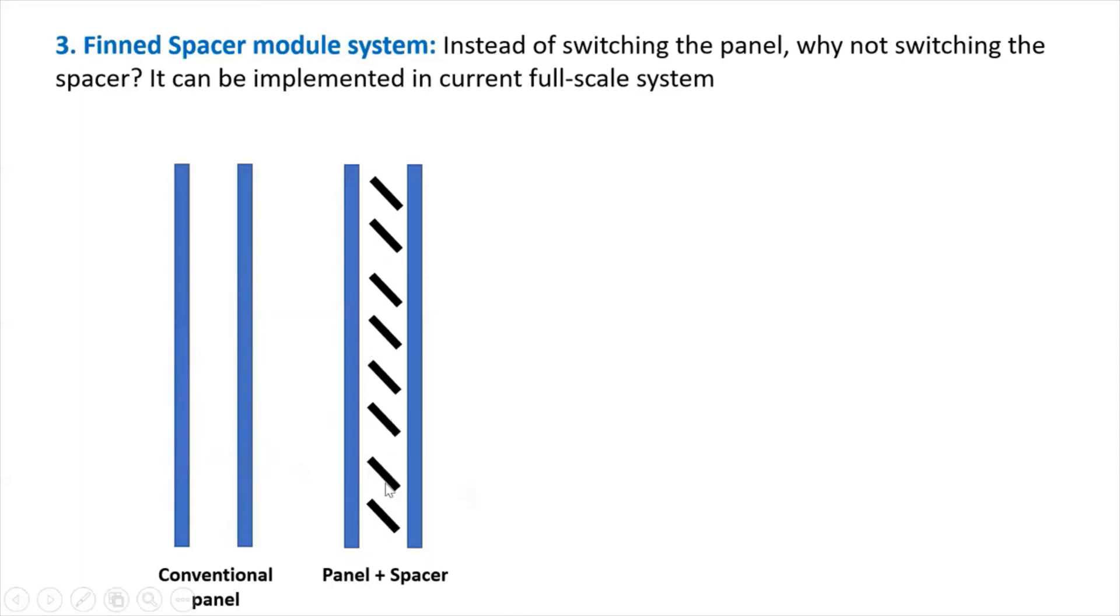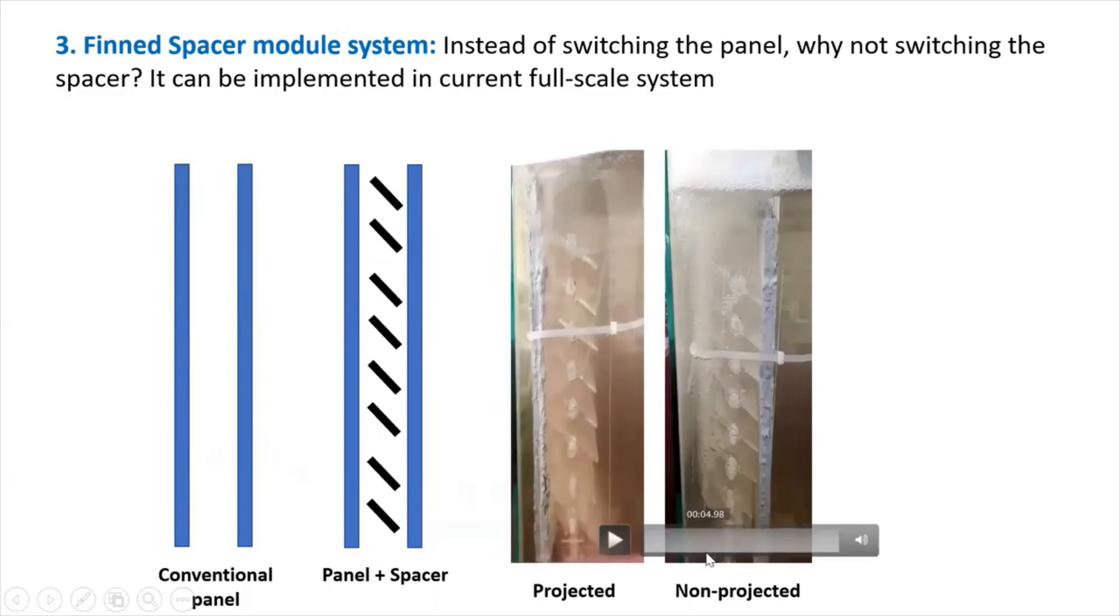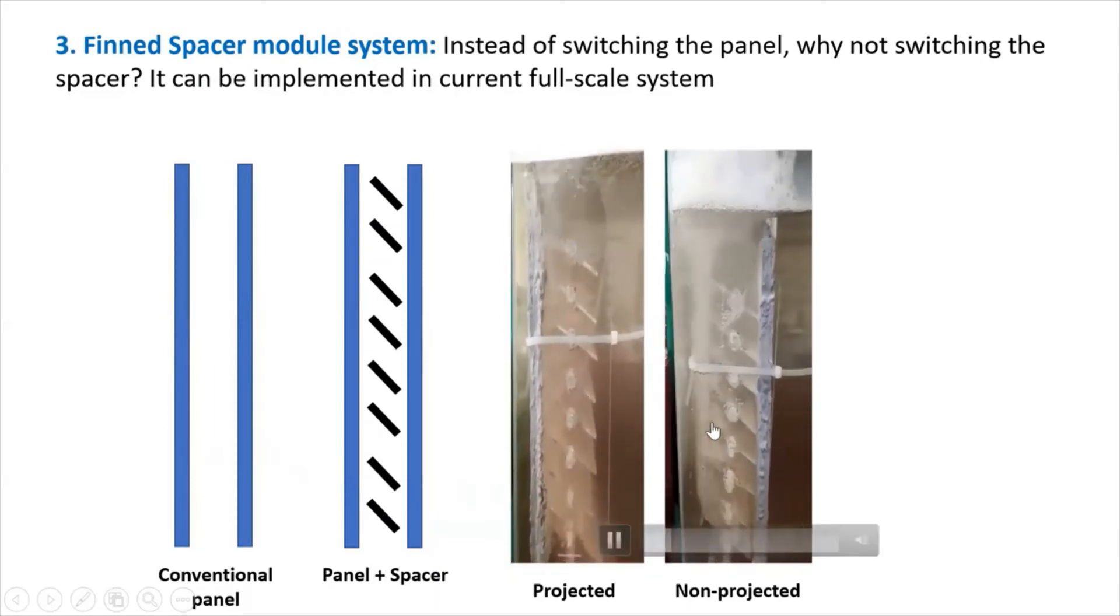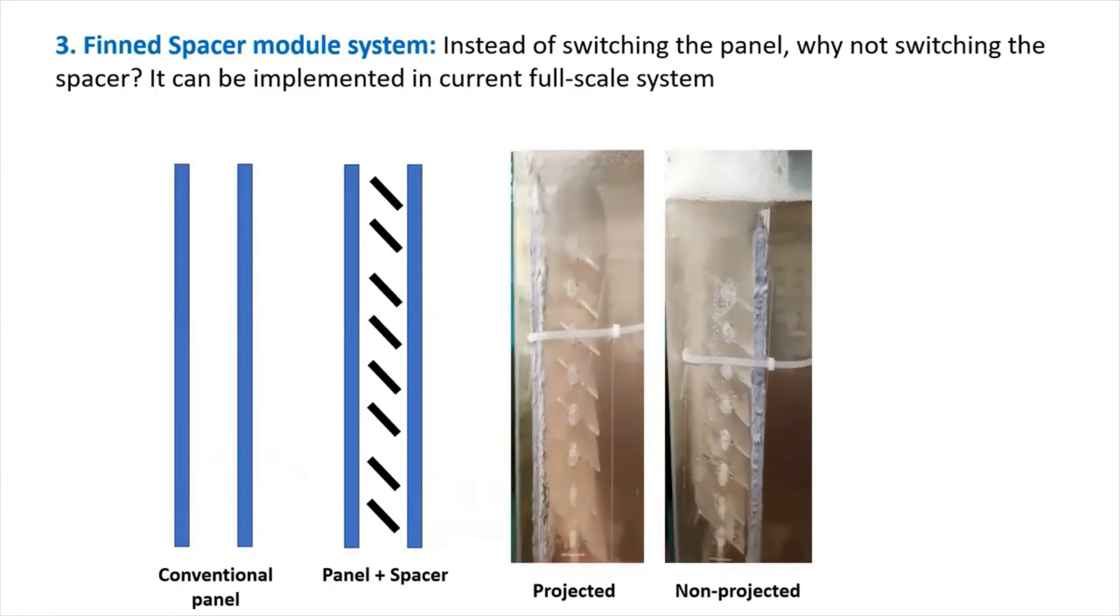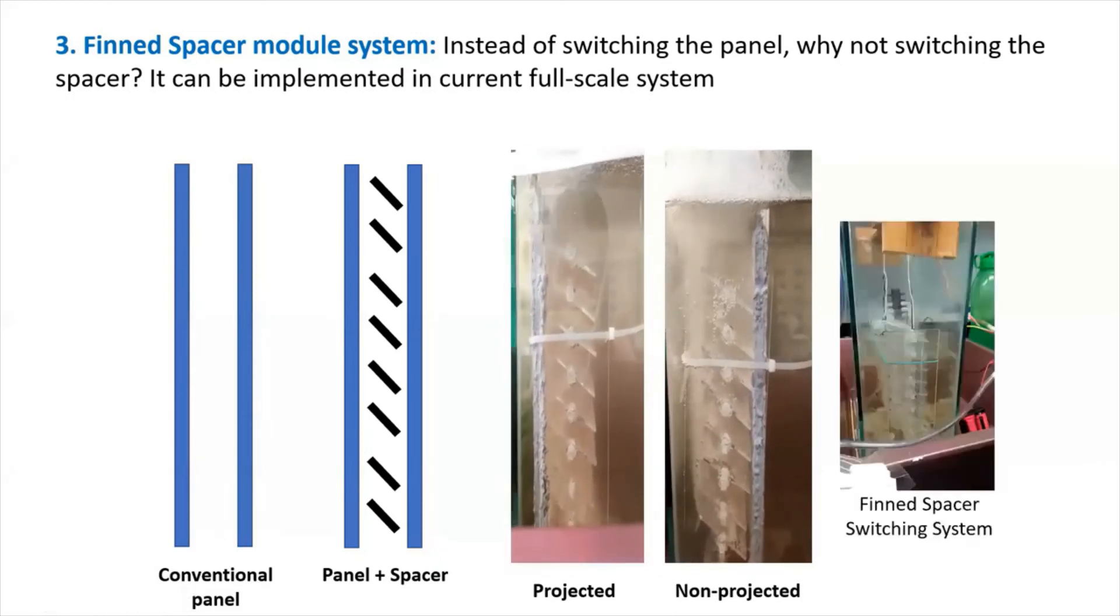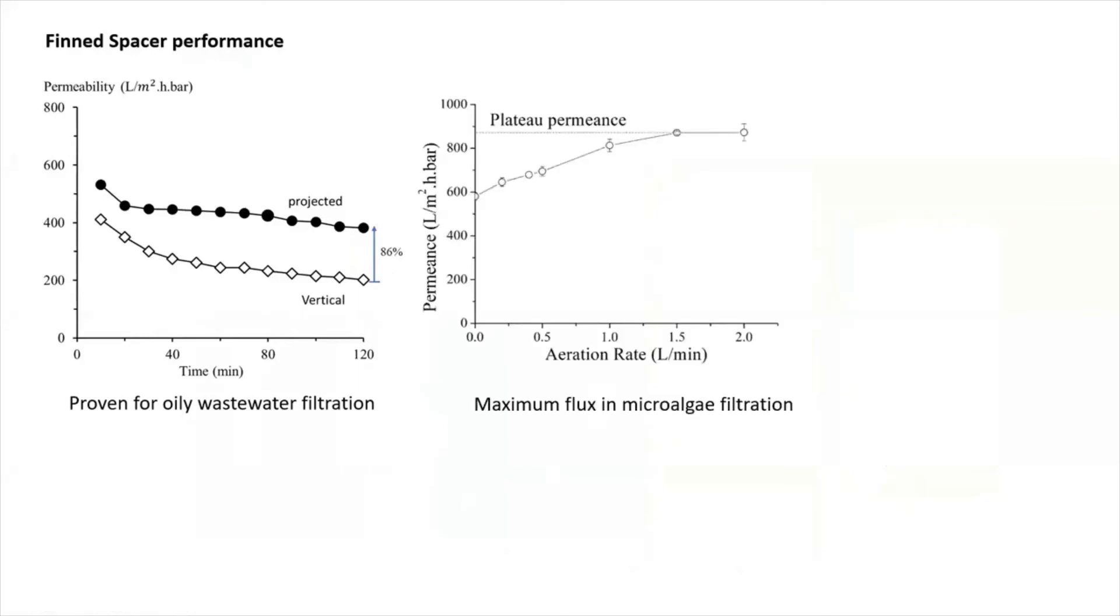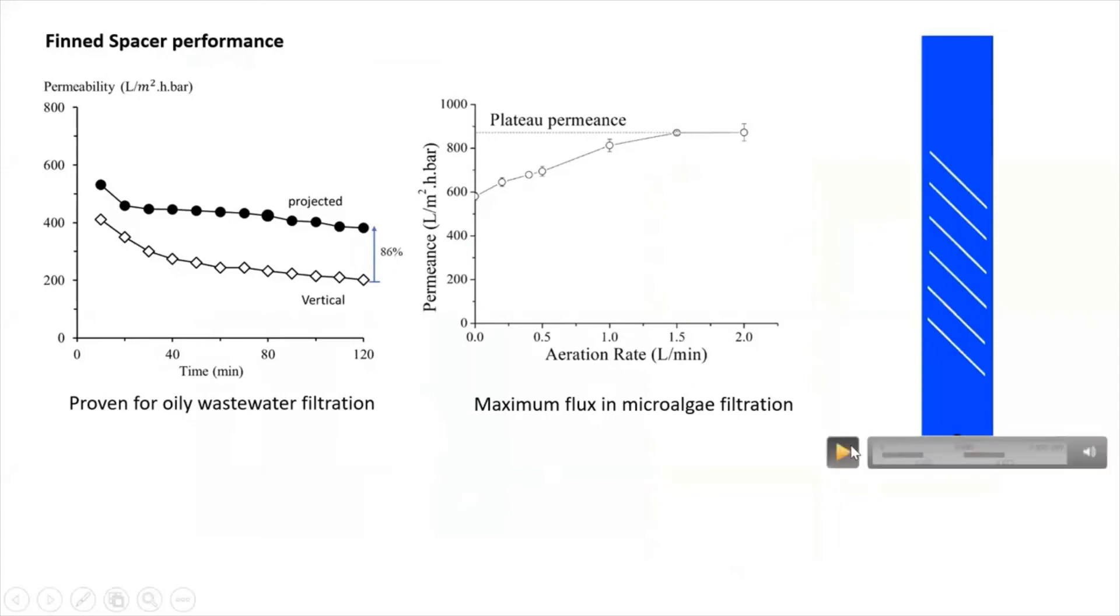If we put spacer inside, and actually you see here, this is an example of our lab experiments, we can actually direct the flow of bubble to left side, in this case, because we have one membrane on the left, or to the right side, if you put membrane on the other side. We ran it in lab scale experiment for oily water, and we see actually 86% improvement in permeability. We ran it for microalgae filtration, and we achieve quite high permeability, close to 900.